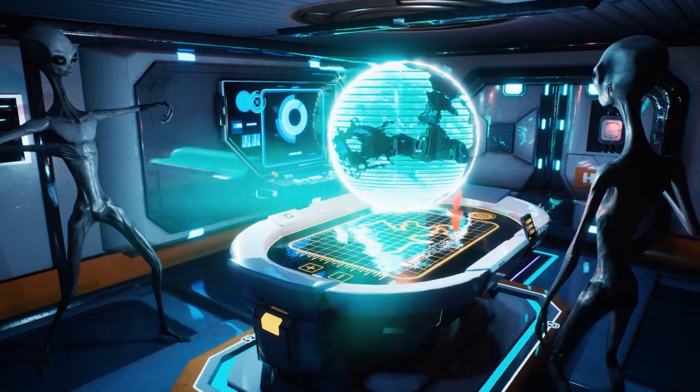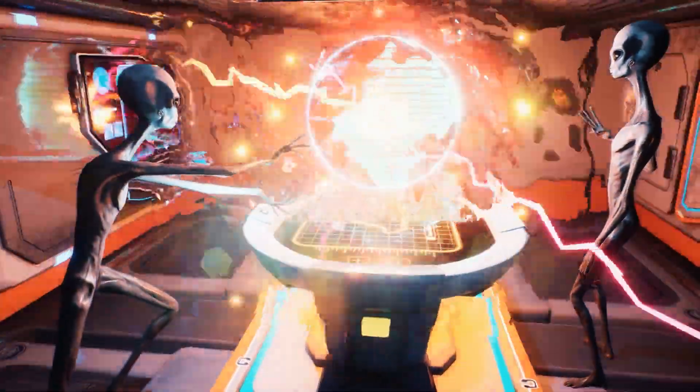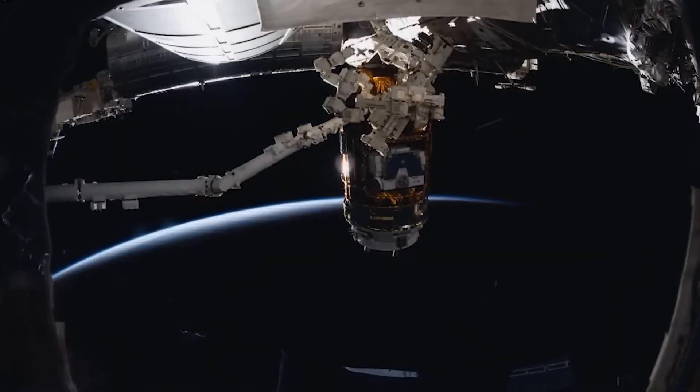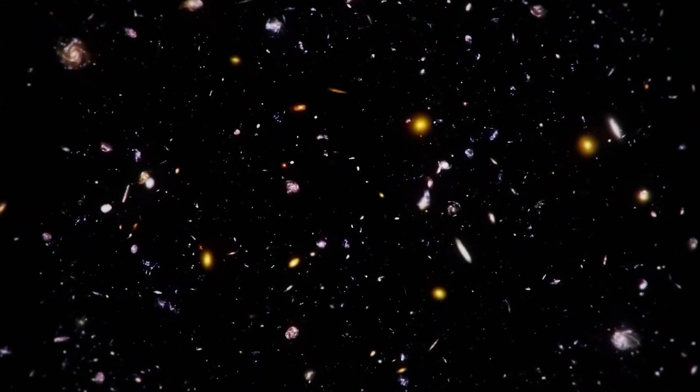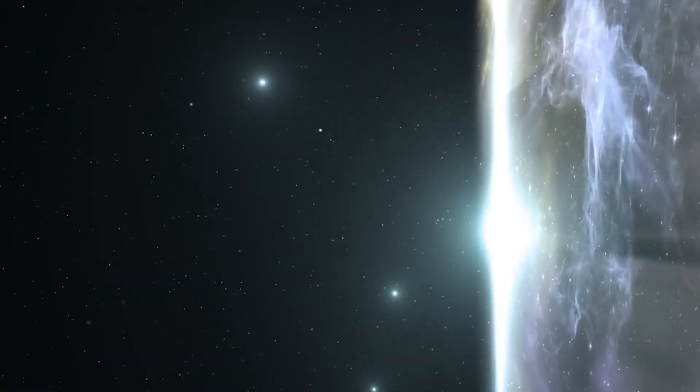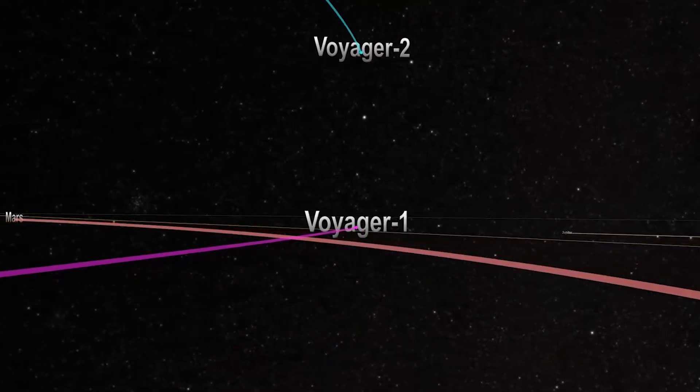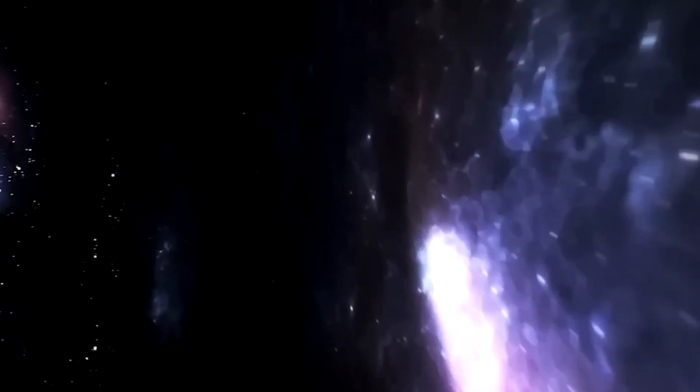However, there is also the possibility that the extraterrestrial entity may not be friendly or may have hostile intentions. In this scenario, we would need to be cautious and careful in our approach to avoid any potential harm or danger. Another possibility is that the message was not sent by an extraterrestrial entity, but was instead a natural phenomenon or a glitch in the spacecraft's systems. While this may be a disappointing outcome, it would still provide valuable information for scientists to study and learn from.